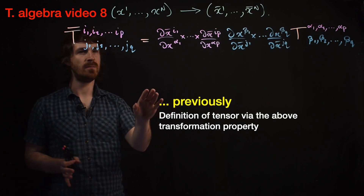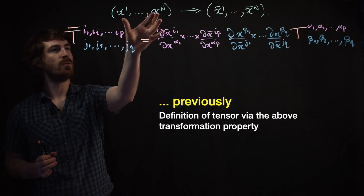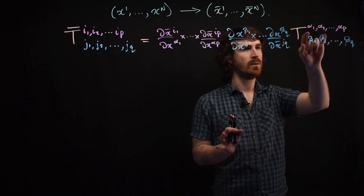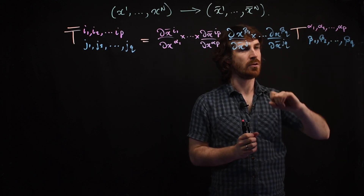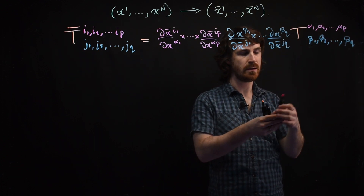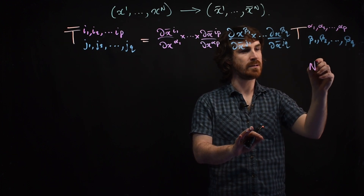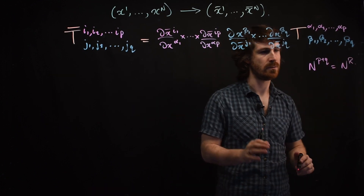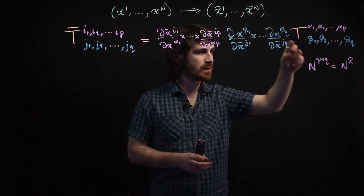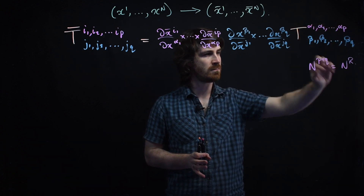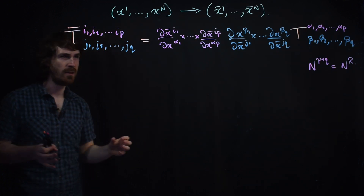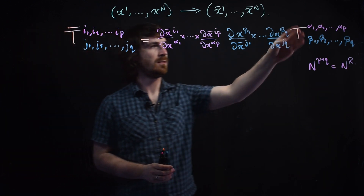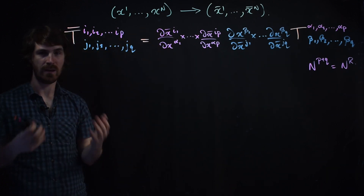Previously, we defined what a tensor was by thinking about what happens to a set of components when we move from one set of coordinates to another. We find that the set of components T, with P contravariant indices and Q covariant indices, has N to the power of R components, where R is the rank P plus Q. This set of functions were components of a tensor if they transformed between coordinate systems according to the required rule.